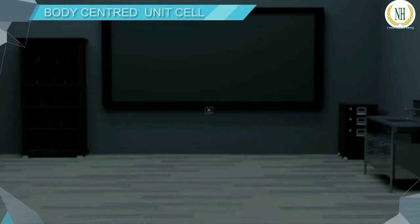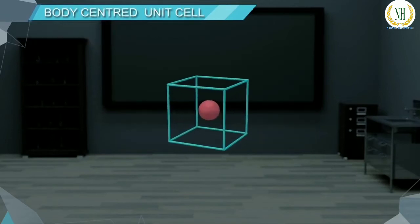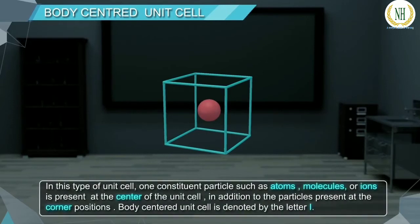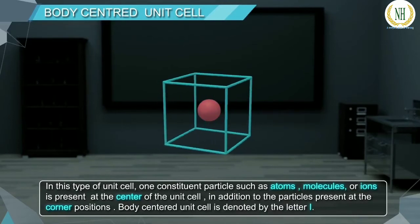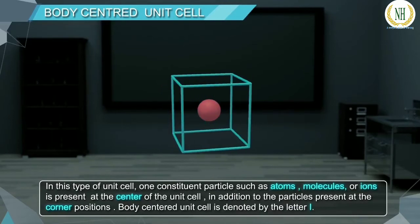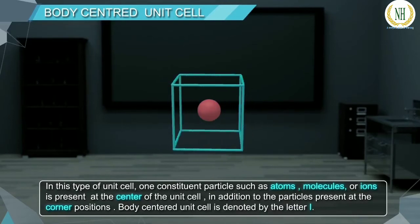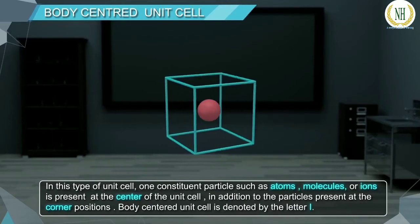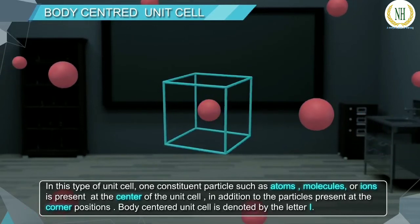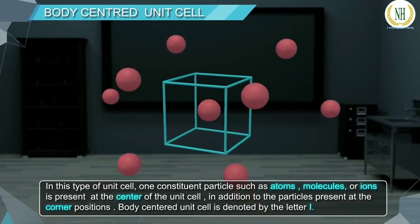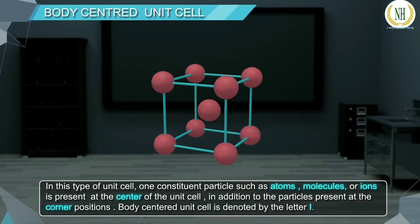Body Centered Unit Cell: In this type of unit cell, one constituent particle — such as atoms, molecules, or ions — is present at the center of the unit cell, in addition to the particles present at the corner positions.